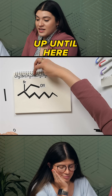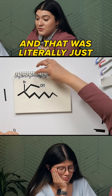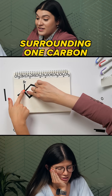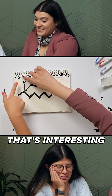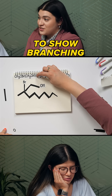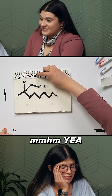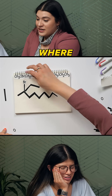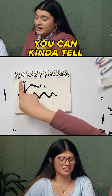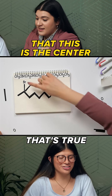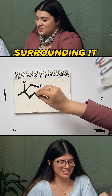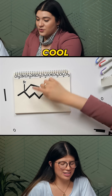We got everything up until here and that was literally just surrounding one carbon. So that's a different way to show branching — where I just know this is the center one. Even looking at it, you can kind of tell that this is the center, and all of that is surrounding it.